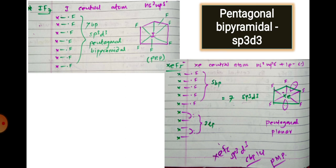For XeF5⁻ (xenon pentafluoride anion), xenon has eight electrons plus one extra electron added due to the negative charge, giving nine total electrons. Five electrons are shared with fluorine, leaving two lone pairs. Total = 5 + 2 = 7, sp3d3 hybridization. Both axial positions are replaced by lone pairs. These are the three possible sp3d3 combinations.